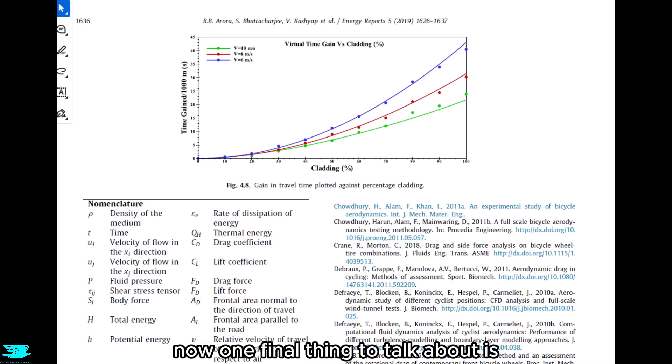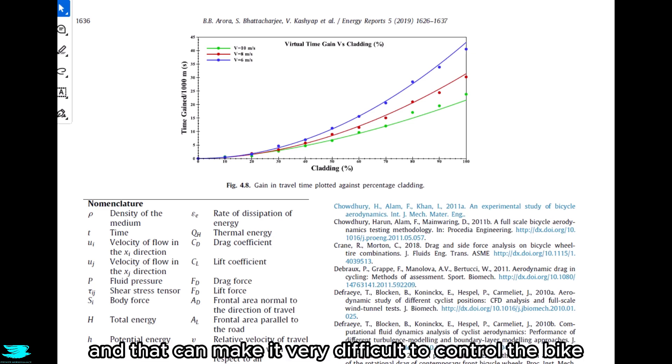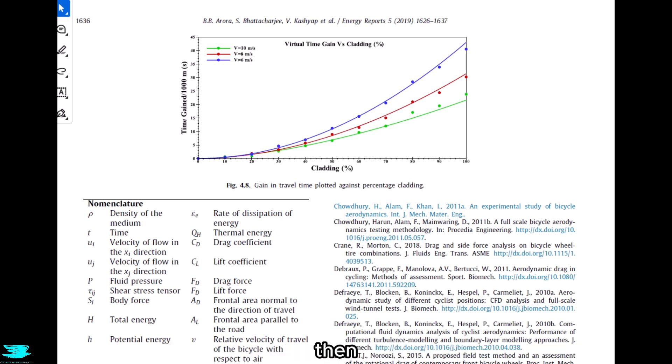Now, one final thing to talk about is that while the drag drops, it doesn't mean that it makes it easier for the rider to travel that distance. If the wind direction is exactly head-on, then it does. But if there's a slight crosswind, then covering the rim more means more of a side force will be created. And that can make it very difficult to control the bike then. And even if the drag drops by a similar amount still, the side force created can still make it difficult to control and that makes it harder to ride, just in a different sense. But still, the drag reduction is very interesting and for certain circumstances, very valuable.